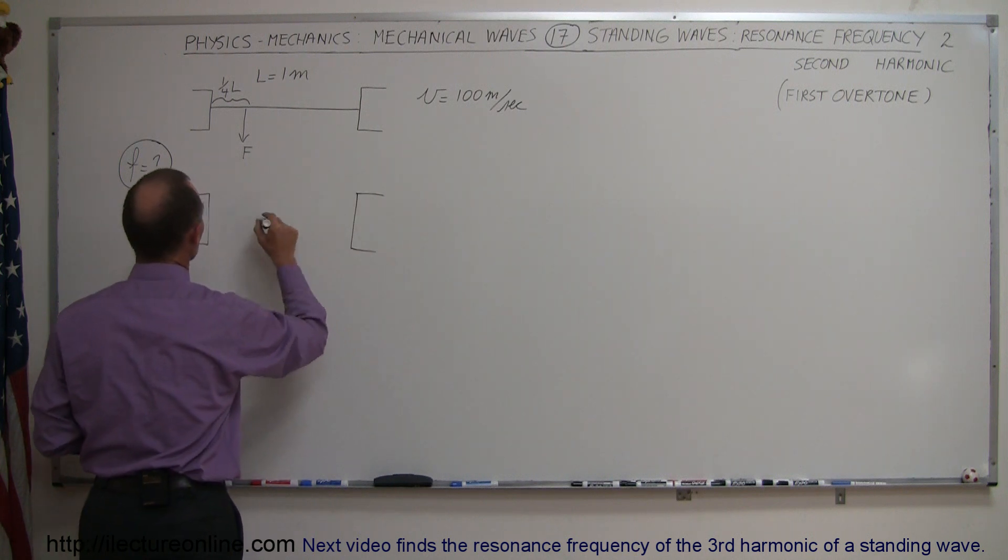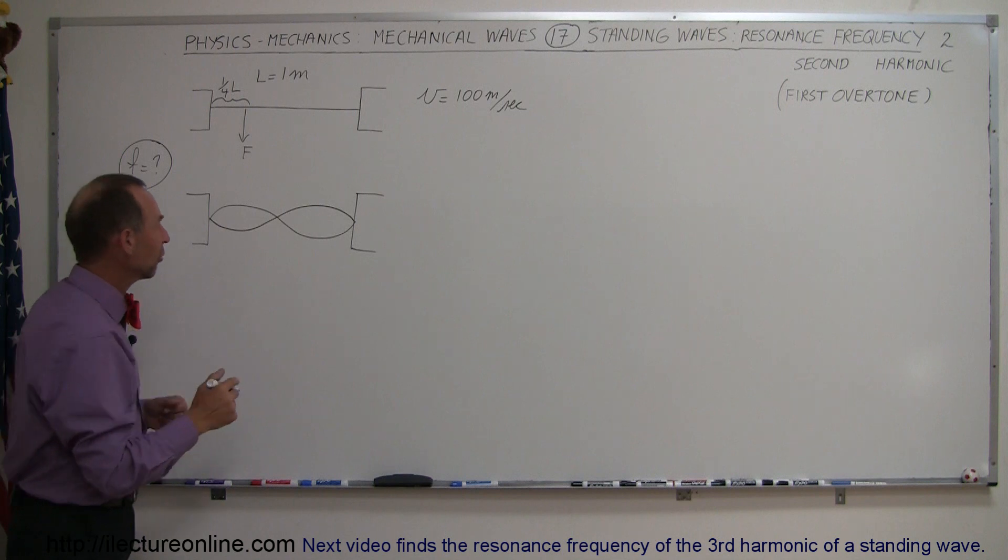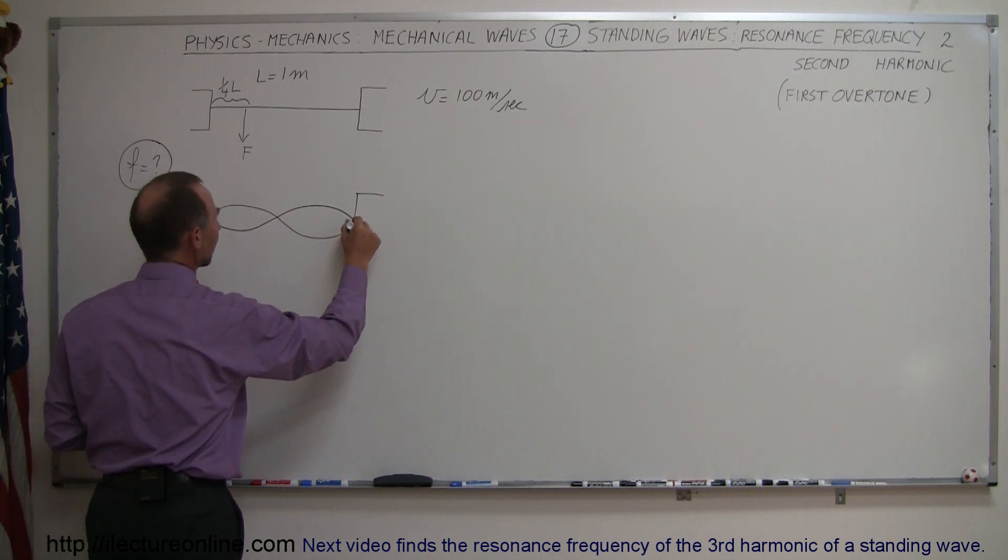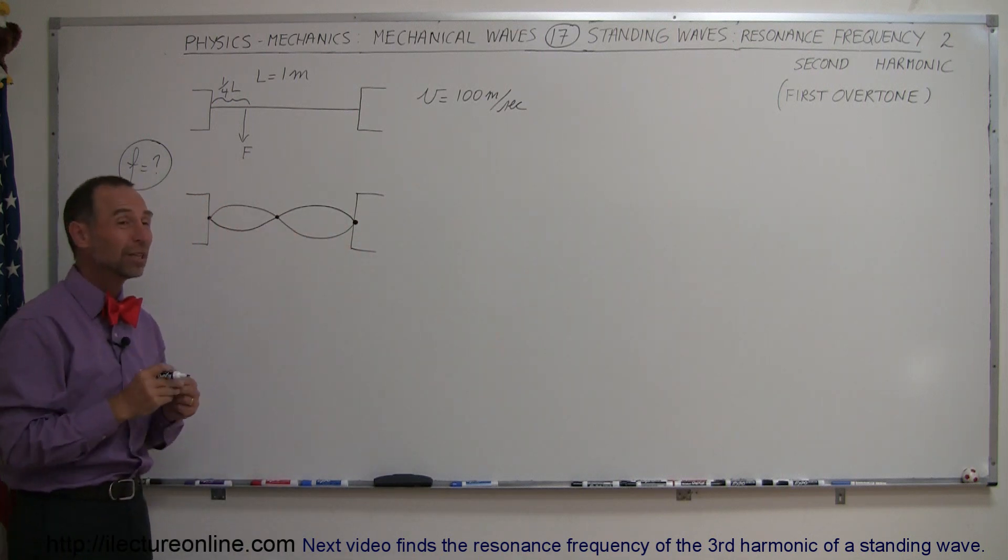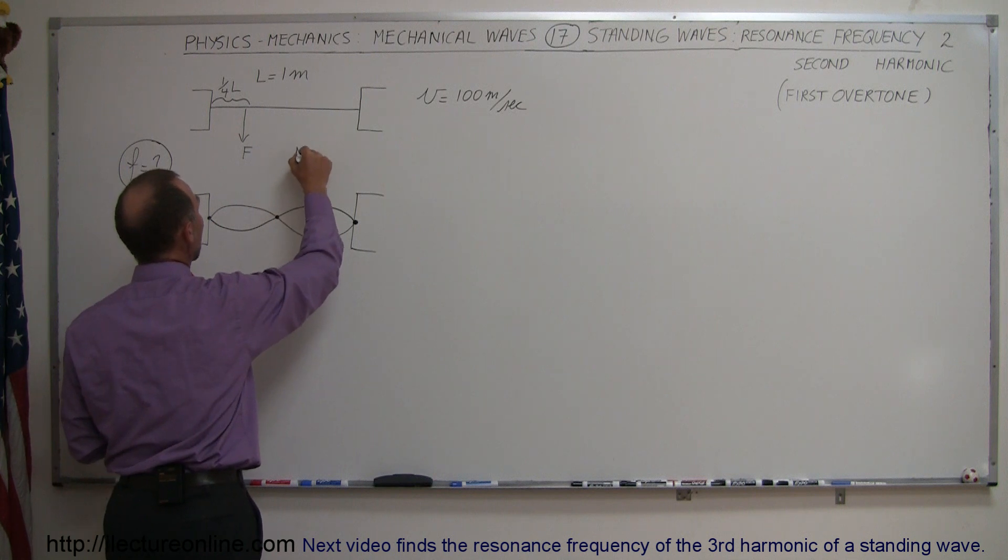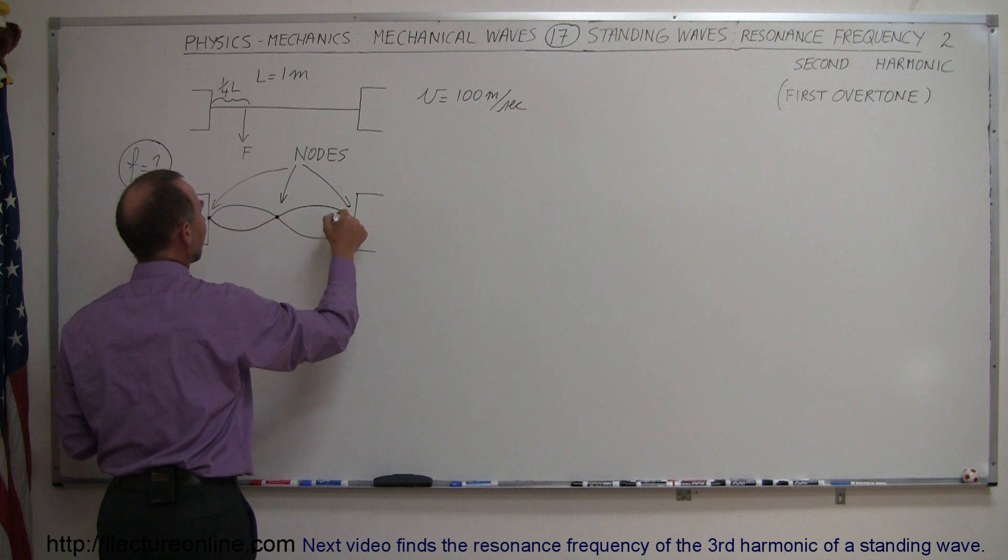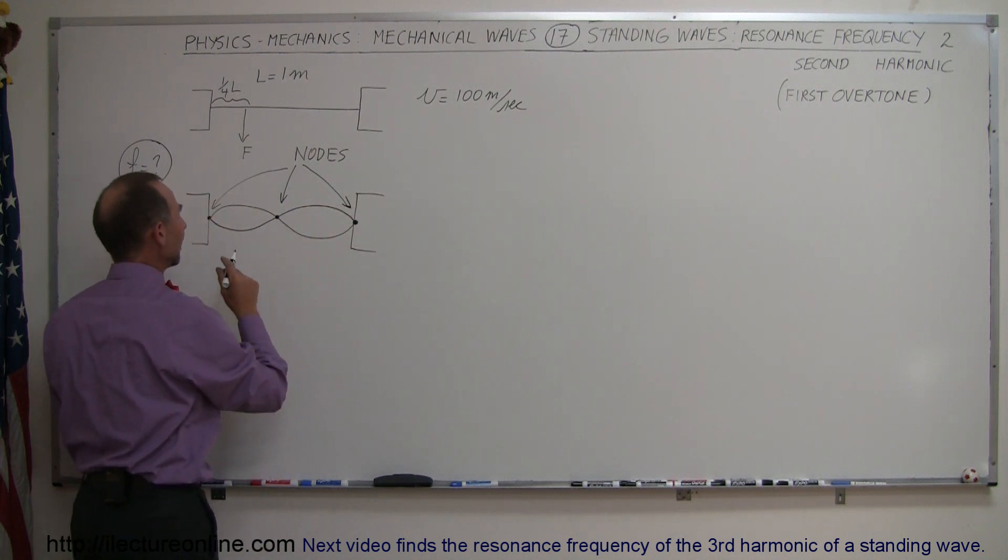When we do that, we get something that looks like this. We get a string oscillating in such a way that the very end point doesn't move, the very end point on the other side doesn't move, and then there's a point right in the middle where the string doesn't move either. Those are known as nodes. And then the places where the string has its maximum oscillation amplitude, those are called the antinodes.